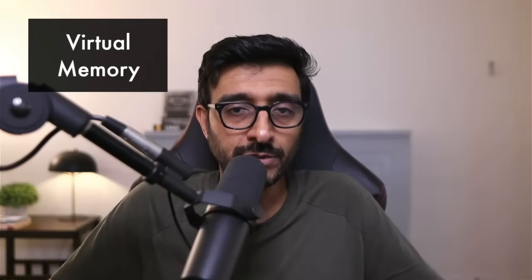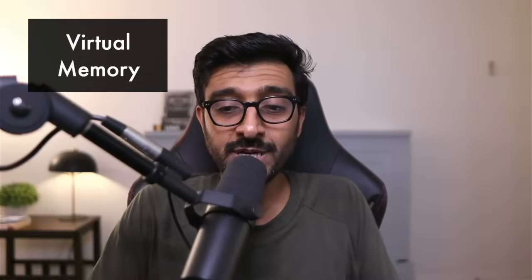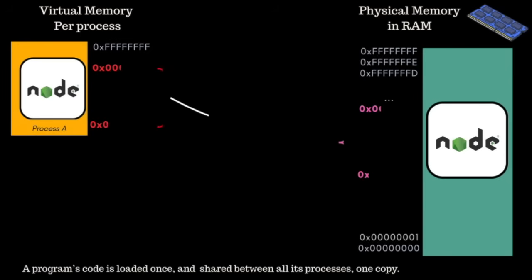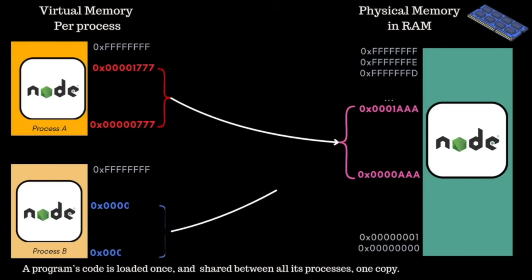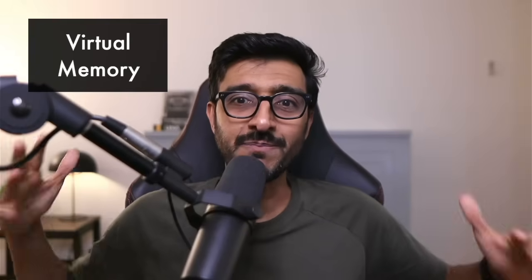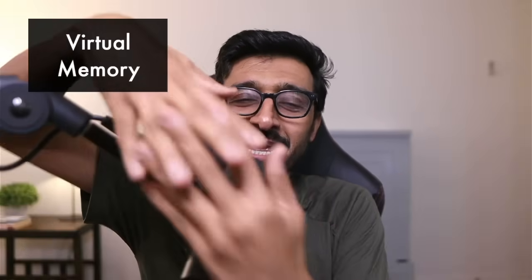Another example: if you have Node as a process and you execute a thousand Node processes, all of them have the same source code and machine code. Virtual memory allows us to load that source code once into physical pages, and then all those processes simply map their virtual addresses to the same physical memory for the code.